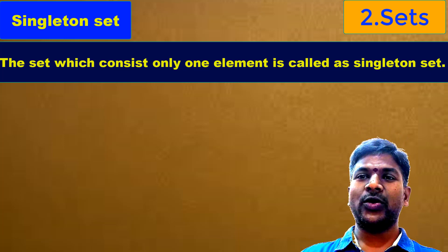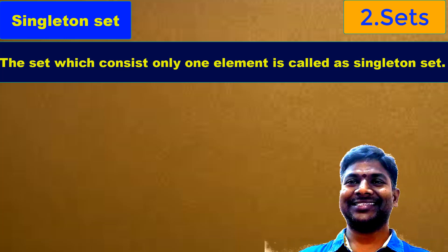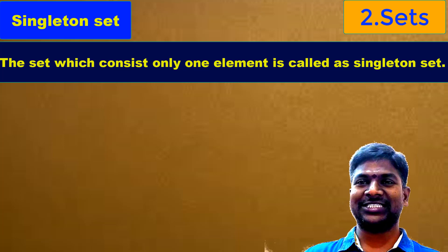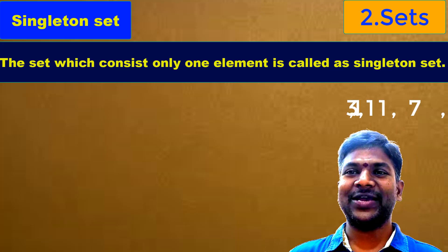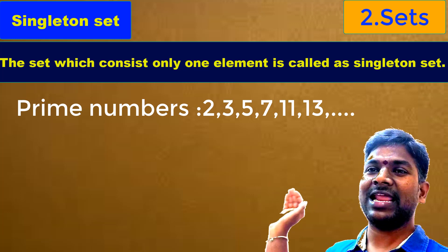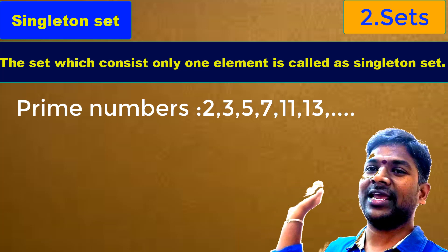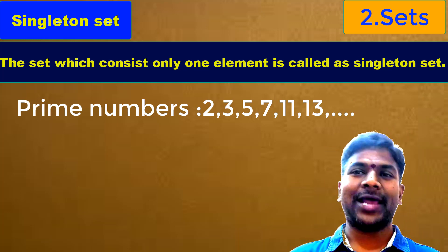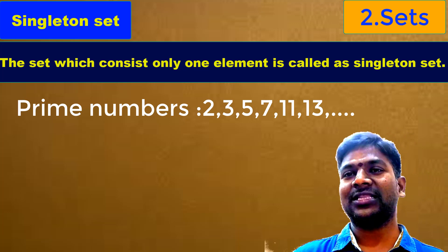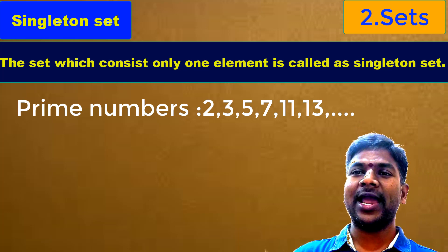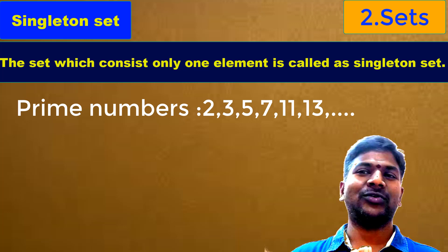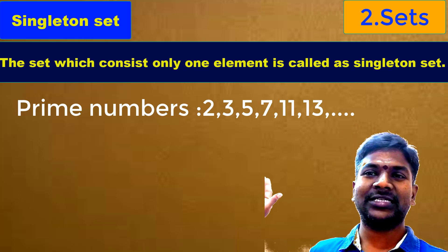Children, do you know prime numbers as we discussed earlier? What are the prime numbers? 2, 3, 5, 7, 11, 13, and so on. These are the prime numbers. Prime numbers are the numbers which are divisible by only one and itself.